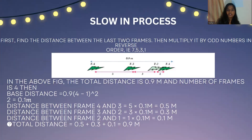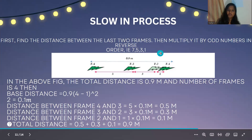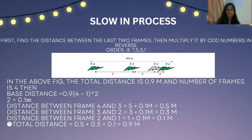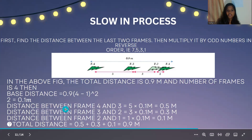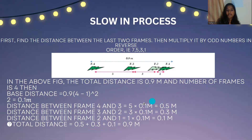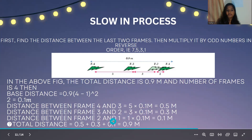Next is the slow in process. Here we take the last two frames and multiply the odd numbers in reverse order. In slow out we used the sequence 1, 3, 5, 7, but here we use 7, 5, 3, 1, taking the frames in reverse order. The total distance is given as 0.9. Dividing by (last frame minus 1) squared, the base distance is 0.1. Calculating the distance between successive frames and multiplying accordingly, then continuing the process back to frame 1 and summing up, we get the total distance of 0.9.